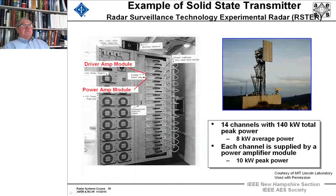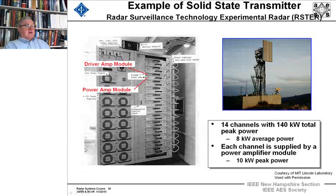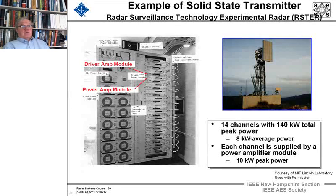Another example is the RISTER — the Radar Surveillance Technology Experimental Radar — a solid-state transmitter built as a system by Lincoln Laboratory, with Westinghouse building the power cabinet. It has 14 channels with 140 kilowatts total peak power and 8 kilowatts of average power. Each channel is supplied by a power amplifier module of 10 kilowatts peak power.